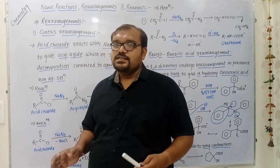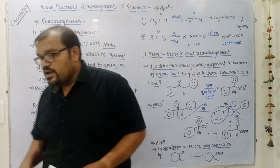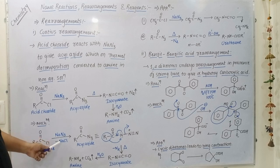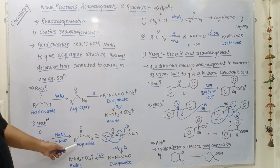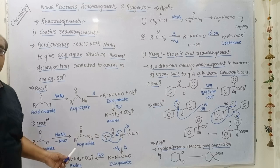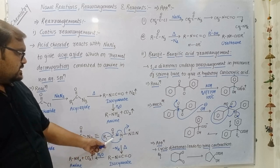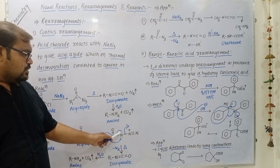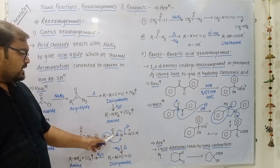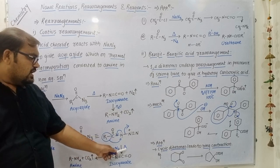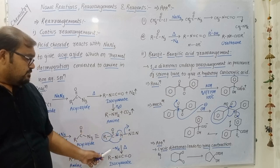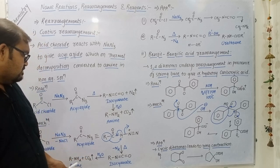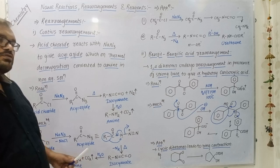In the mechanism, acid chloride reacts with sodium azide; with loss of NaCl it gives acyl azide as product. The acyl azide can also be represented in resonance form. During thermal decomposition, nitrogen is lost as N₂ and the lone pair of nitrogen shifts between carbon and nitrogen. This gives isocyanate as product. The isocyanate upon hydrolysis gives the desired amine with loss of carbon dioxide.